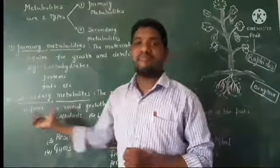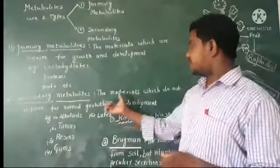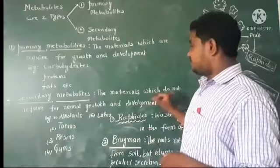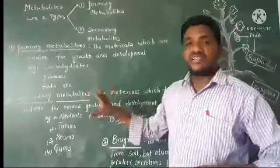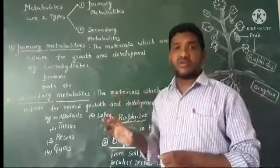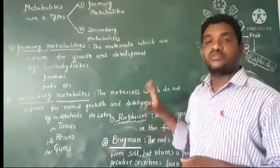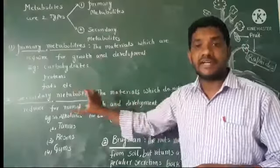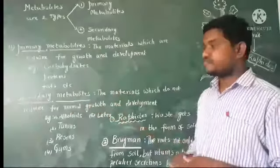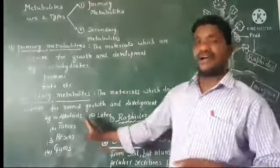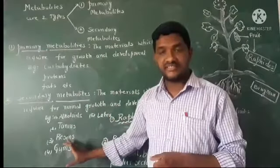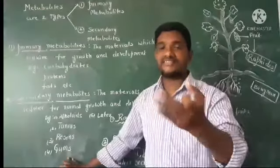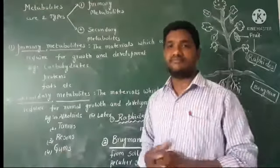The second type is secondary metabolites. These are molecules which are not required for normal growth and development. Examples include alkaloids, tannins, resins, gums, and latex.